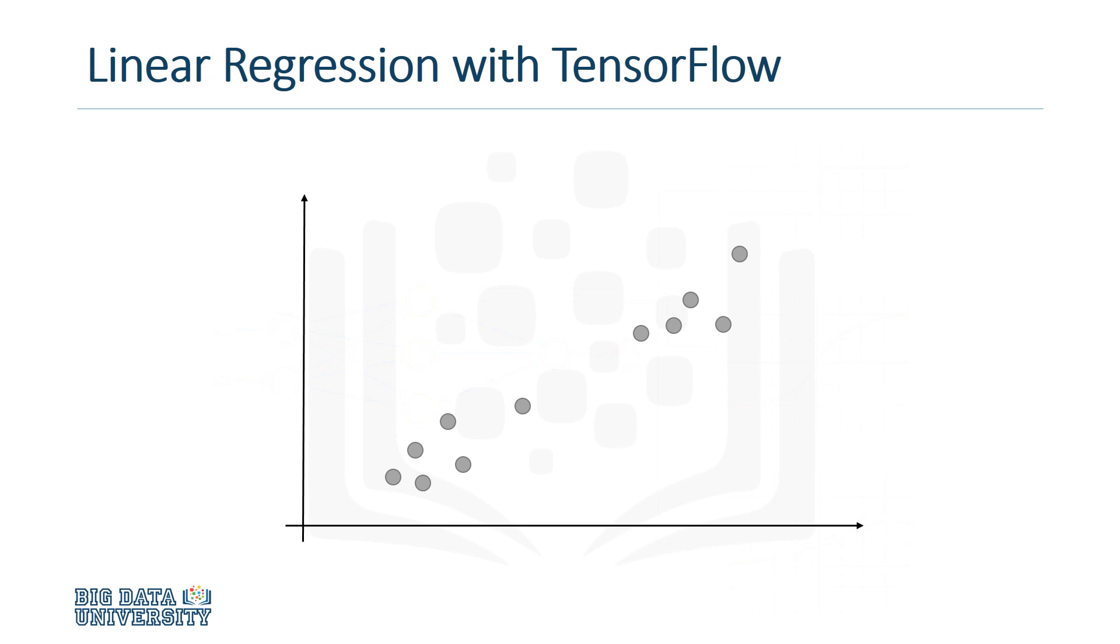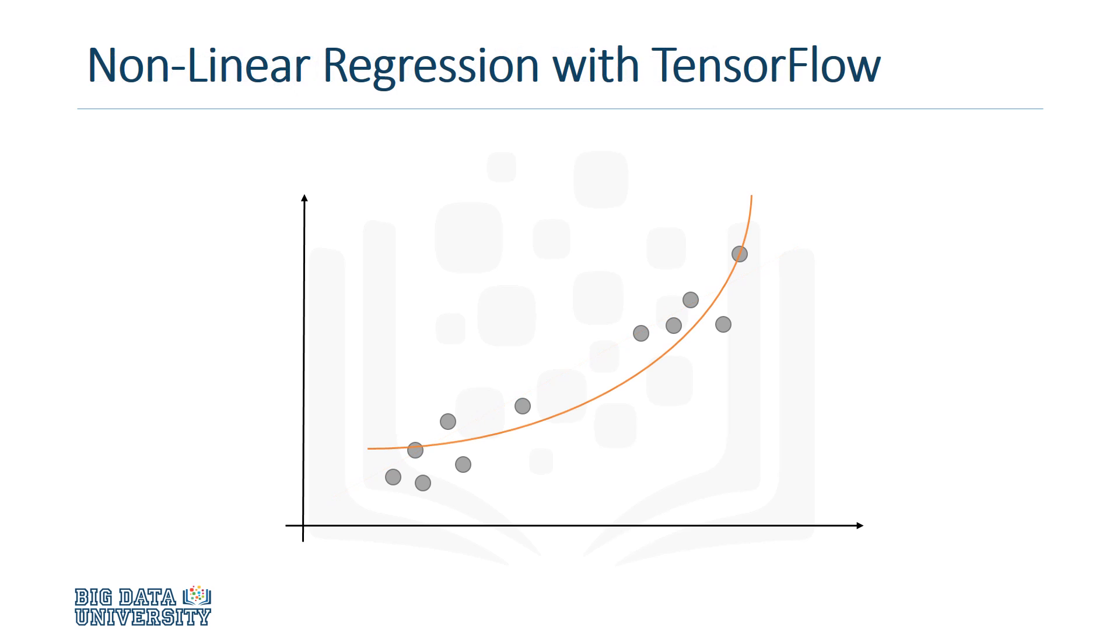But TensorFlow can be used for more than just neural networks. It can also be used to take a set of points and apply a linear regression. In its most basic form, this is essentially a line of best fit. And if a line isn't suitable for your data, you can use TensorFlow to build nonlinear models as well.